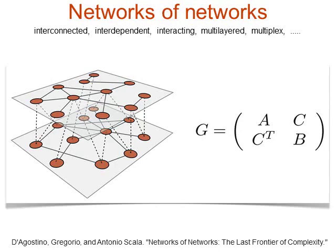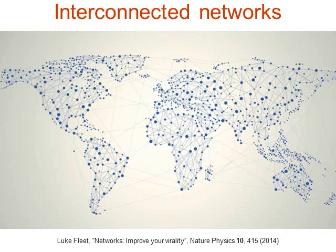For example, in the air transportation network, one layer can be North American airports and the other European airports. Intra-layer connections are flights within the same continent, while inter-layer connections are intercontinental flights.